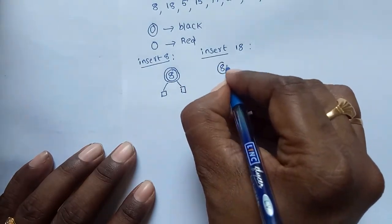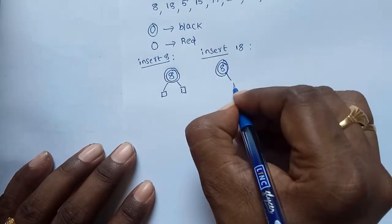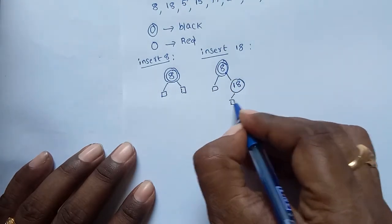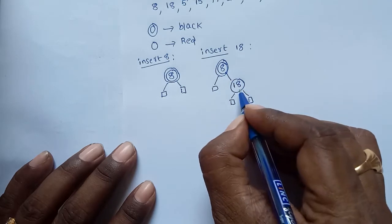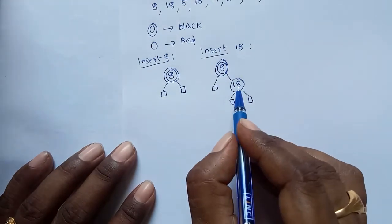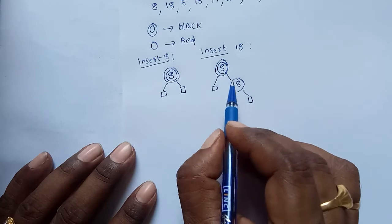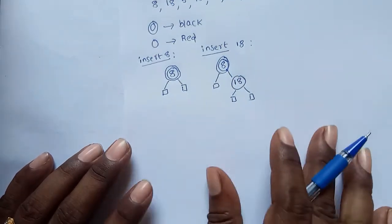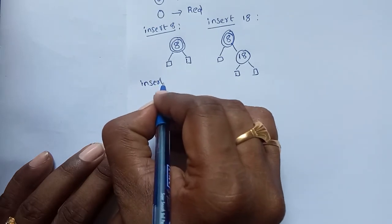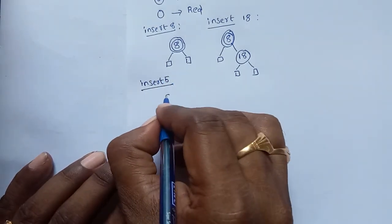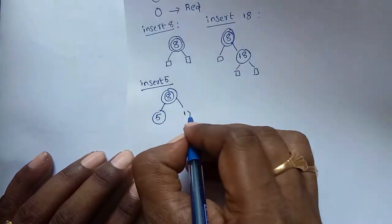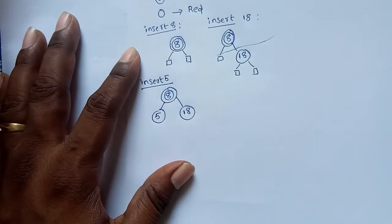Now insert 18. Since 8 is the root, 18 is placed at this position. After insertion, check all the properties: no two consecutive red nodes, and the black height must be same. Next, insert 5. With 8, 5, and 18, again no problem — all properties are satisfied.